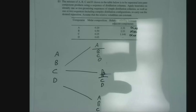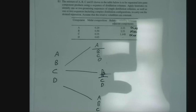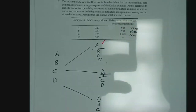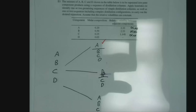Looking at our heuristics, we can start to narrow down these potential separations. Are there any heuristics pointing to the A/B split being favorable? Yes — favor the direct sequence. So that one is a potential winning separation.